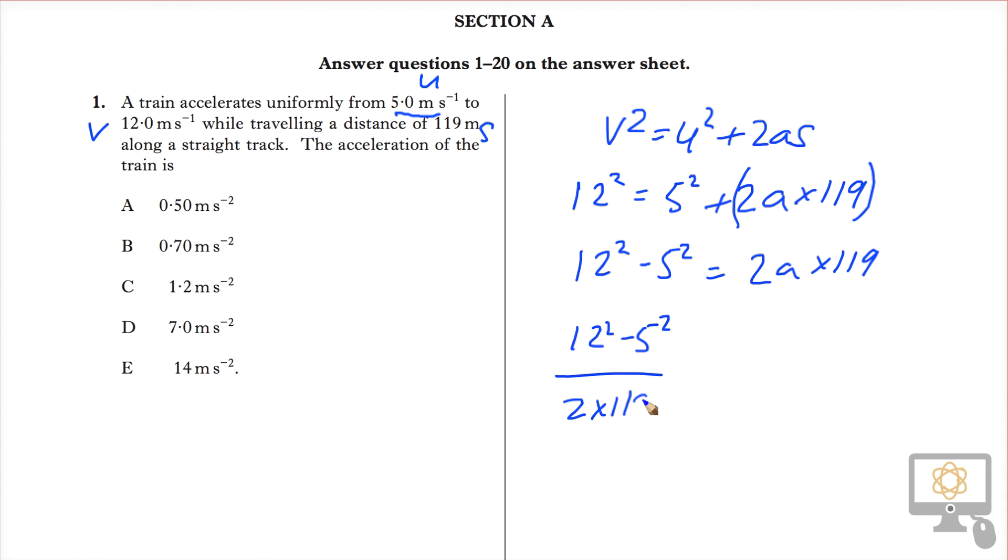When we do that calculation, our value of a is 0.5 meters per second squared, and so that gives us our answer as A.